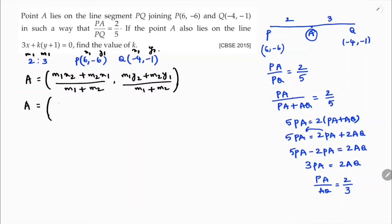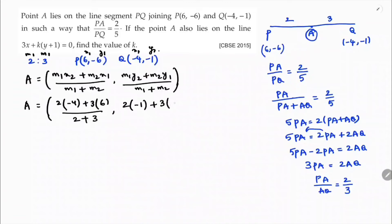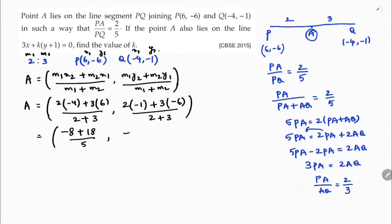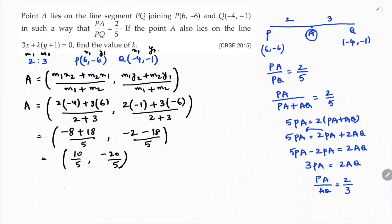Here m1 and m2 are the ratios and x1, y1, x2, y2 are the coordinates. Substituting: m1 is 2, x2 is -4, m2 is 3, x1 is 6, divided by (2+3). For y: m1 is 2, y2 is -1, m2 is 3, y1 is -6, divided by (2+3). So: x = (-8 + 18)/5 = 10/5 = 2, and y = (-2 - 18)/5 = -20/5 = -4.